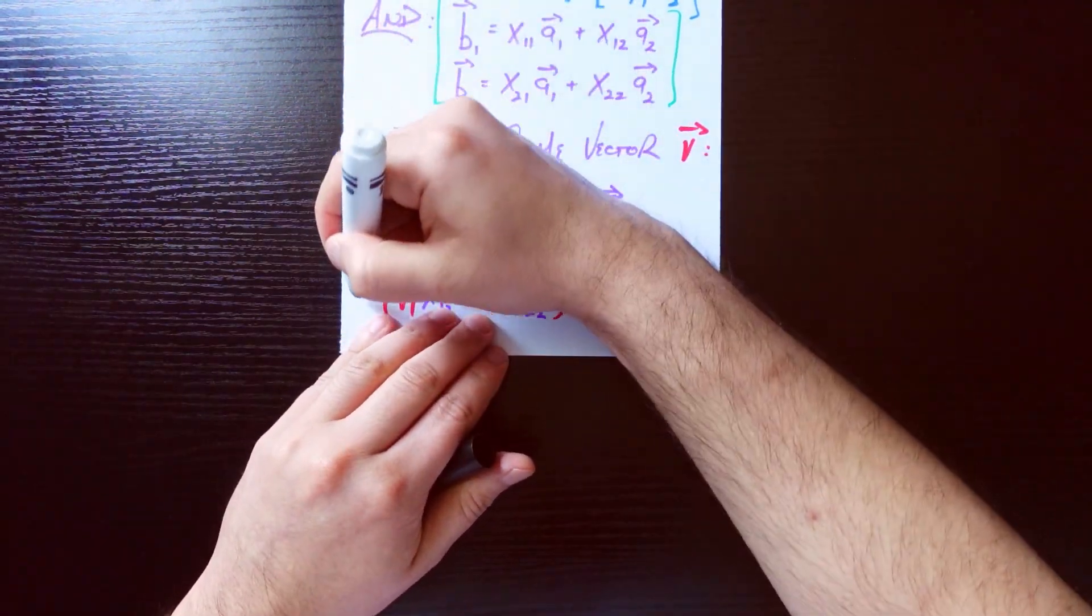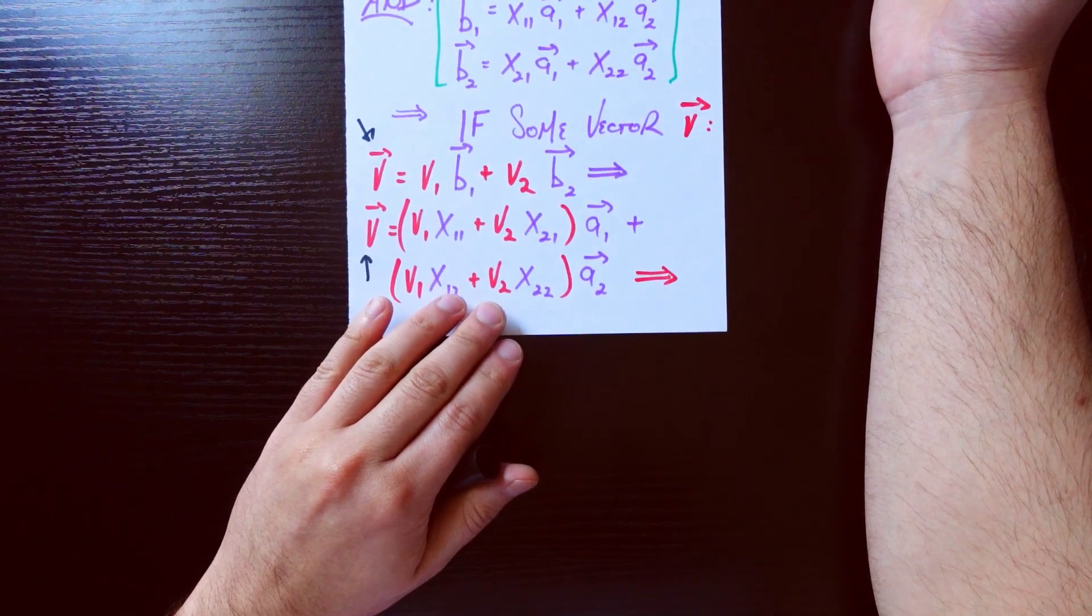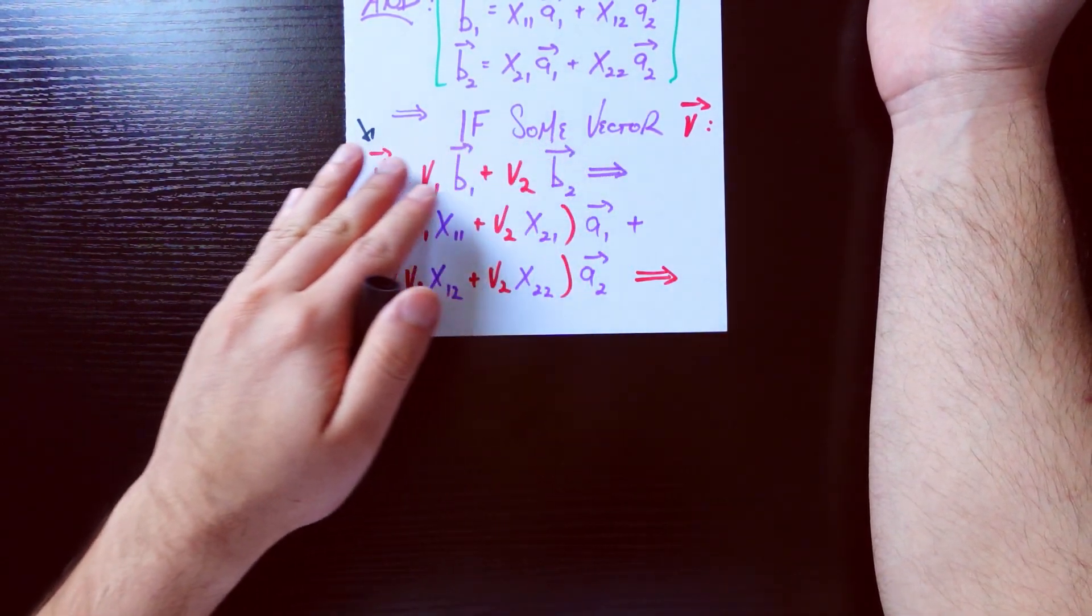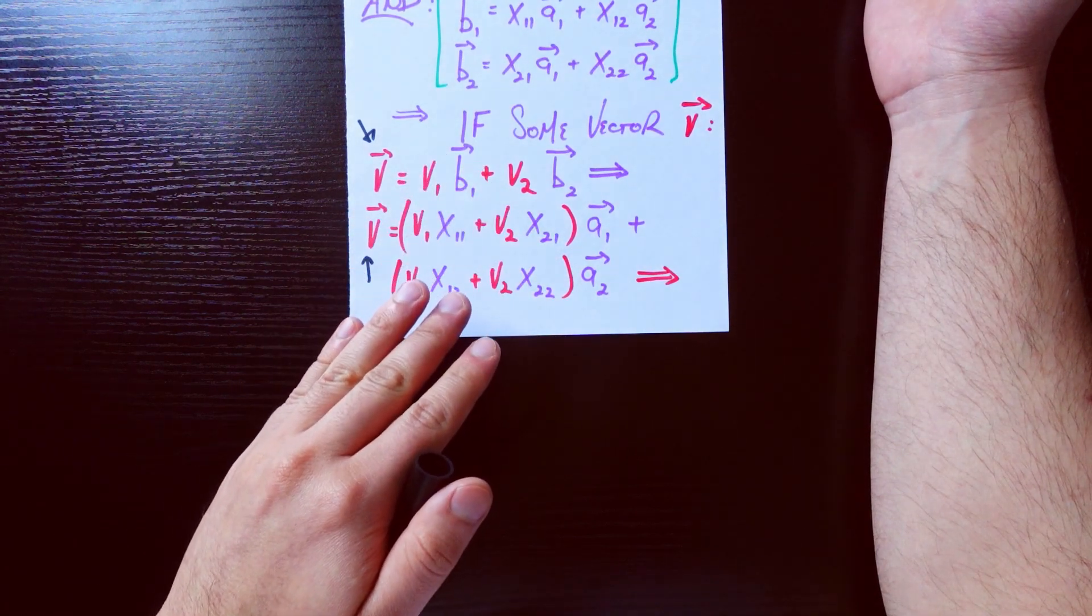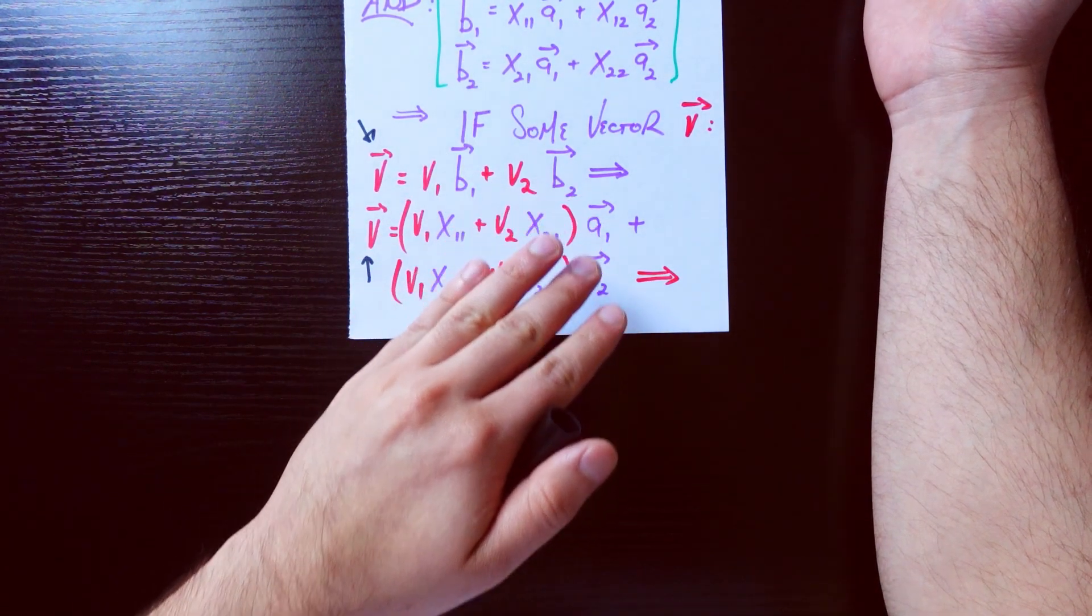And now I get the same vector v. So notice this guy's vector v and this guy is the same exact vector v. The top is the formulation of this vector v in terms of the second basis. And now I can also represent it in terms of the first basis.